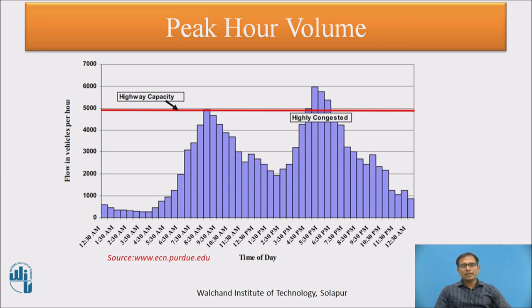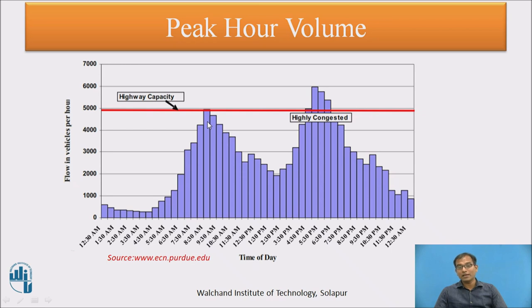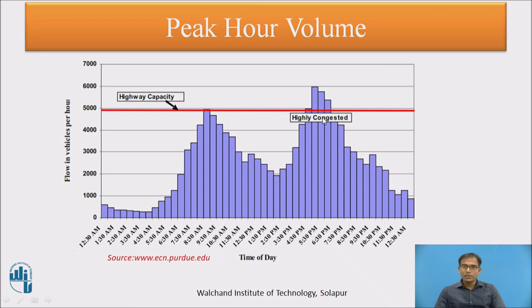From this diagram, you can understand what the peak hour is. The survey is conducted from 12:30 a.m. to the next day at 12:30 a.m. Within this period, traffic between 7:30 and 9:30 shows peak hours. Suppose the capacity at that location is specified as 5,000 vehicles per hour — it is almost reaching capacity. In the evening hours, the peak hour goes beyond capacity, indicating the possibility of congestion.